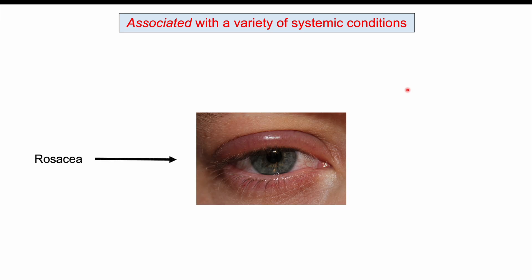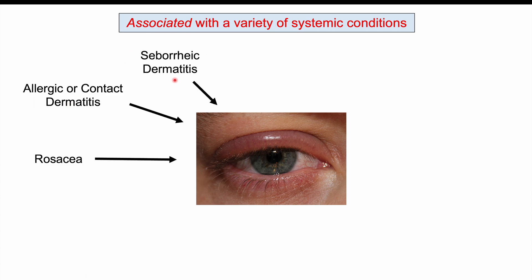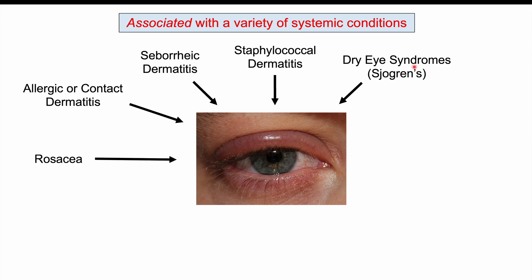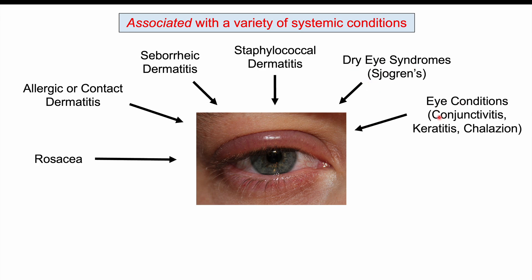Blepharitis is associated with a wide variety of systemic conditions, meaning if you have these conditions you're more likely to suffer from blepharitis. Some of these include rosacea, contact or allergic dermatitis, seborrheic dermatitis, staphylococcal dermatitis, dry eye syndromes like Sjögren's syndrome, and other eye conditions like conjunctivitis, keratitis, and chalazion.